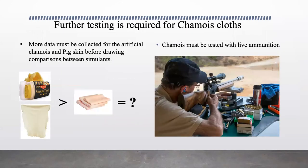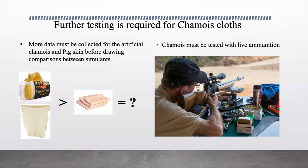The data collected for the chamois cloths is a good indication that the material does in fact impact how a pellet interacts with the gel. However, since pig skin has yet to be tested under the same conditions, we cannot yet confidently say that chamois cloths can be used in reconstructions. Once pig skin is tested, comparisons will reveal whether chamois is a viable alternative. If the values are similar, the simulants can be used as human skin; if different, we can conclude they are more or less efficient than pig skin. Future directions include using the chamois cloths with live ammunition, since it is most likely someone will be shot with a pistol rather than an air rifle.